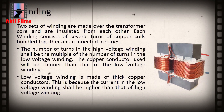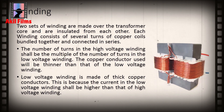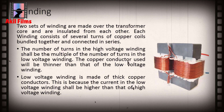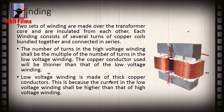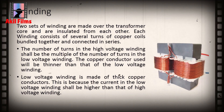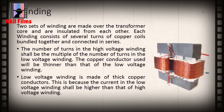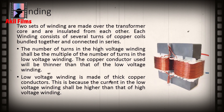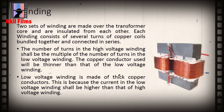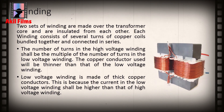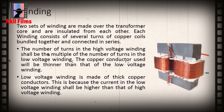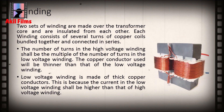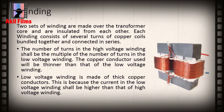Each winding consists of several turns of copper coils bundled together and connected in series. The number of turns in the high voltage winding shall be a multiple of the number of turns in the low voltage winding. The copper conductor used in the high voltage winding will be thinner than those of the low voltage winding.